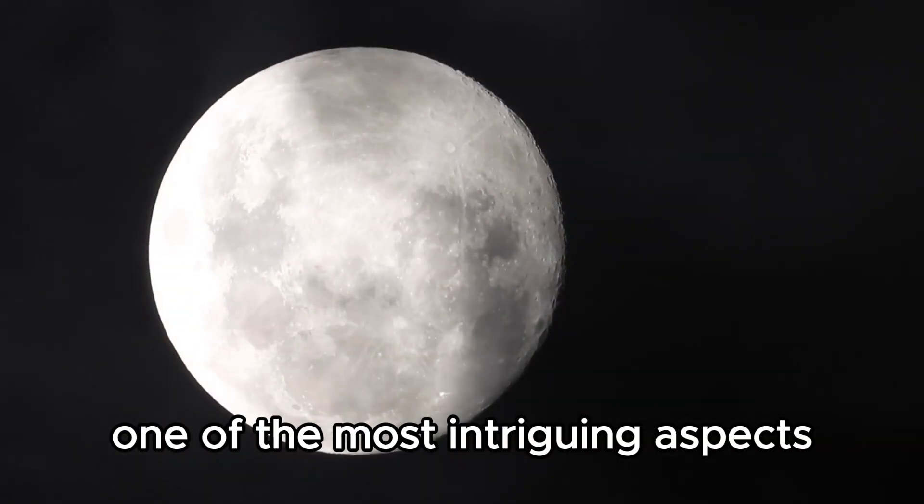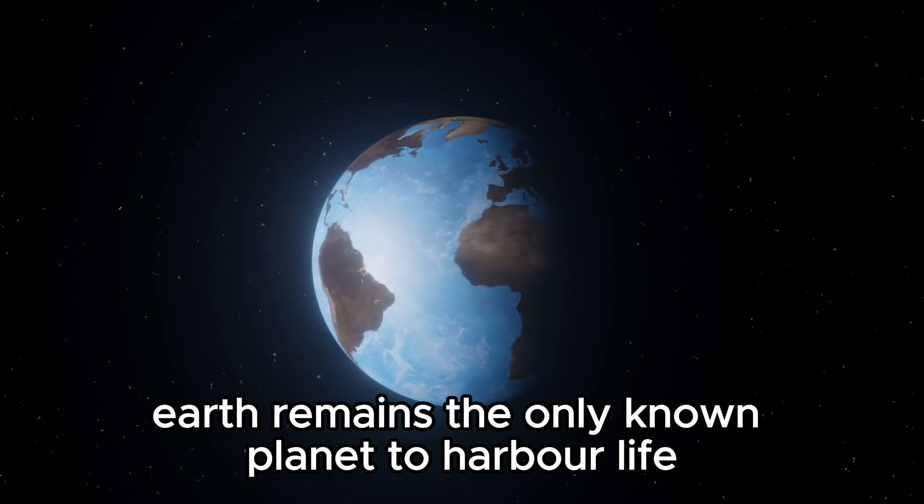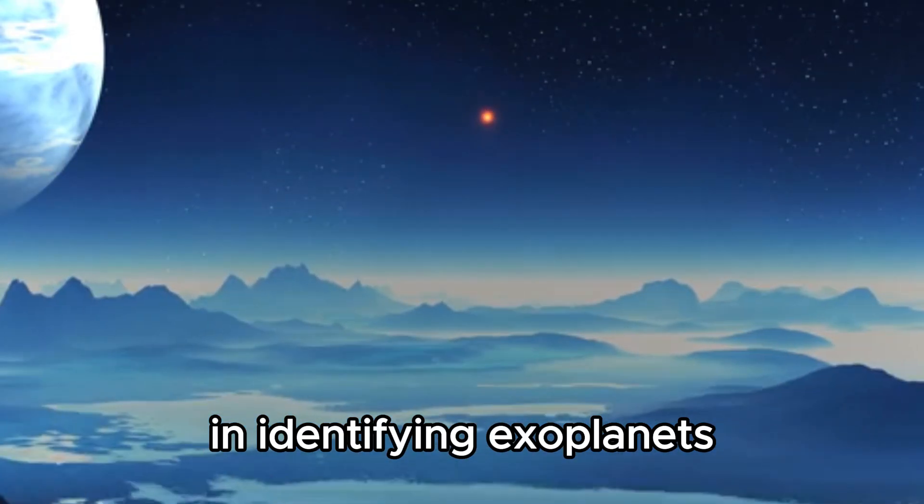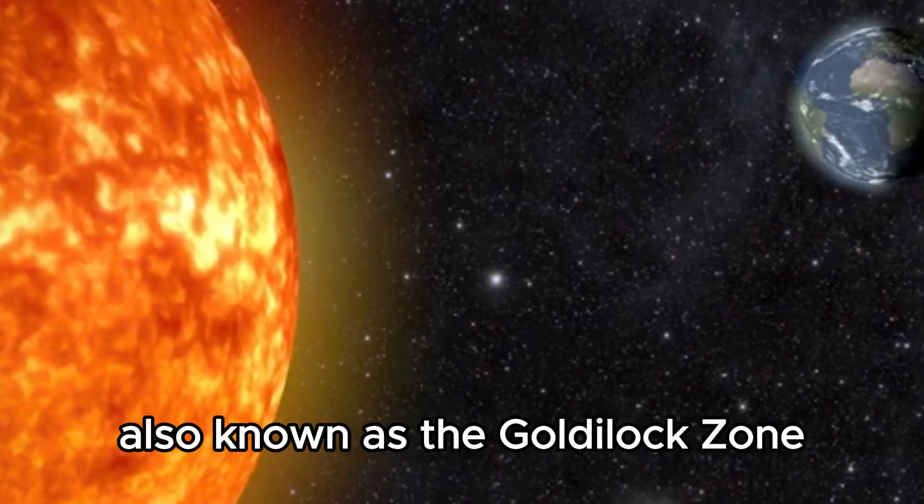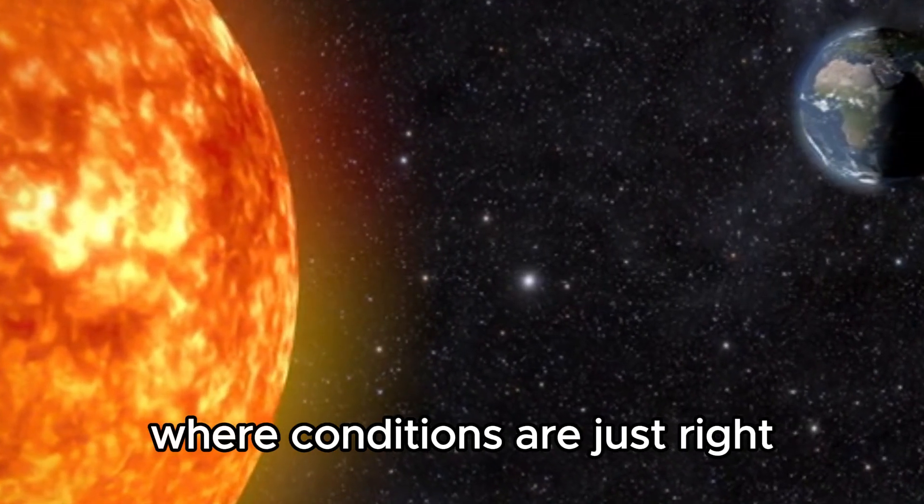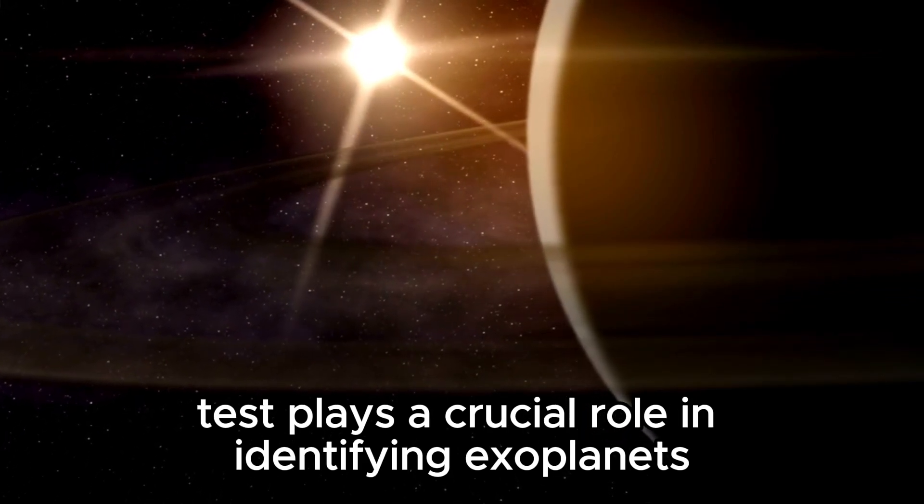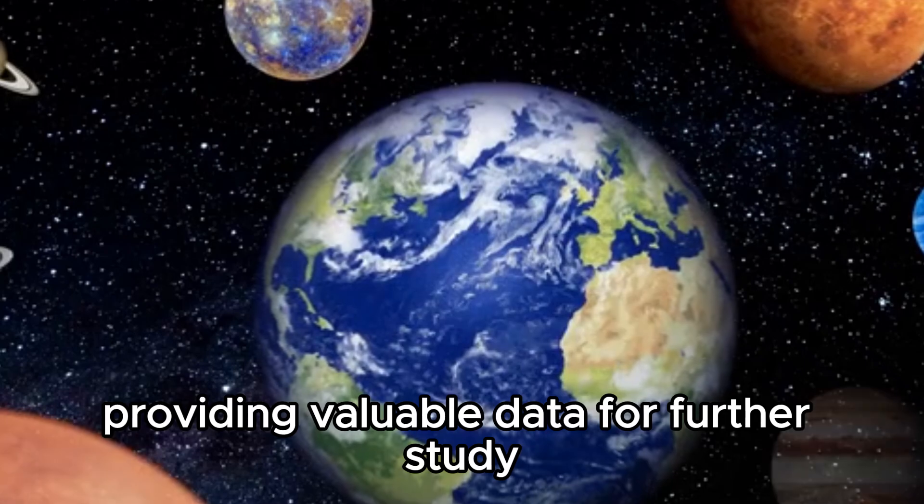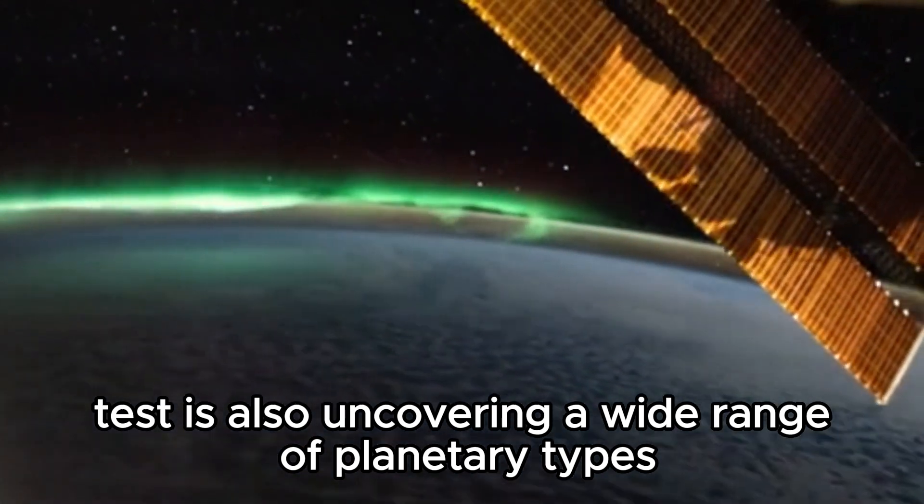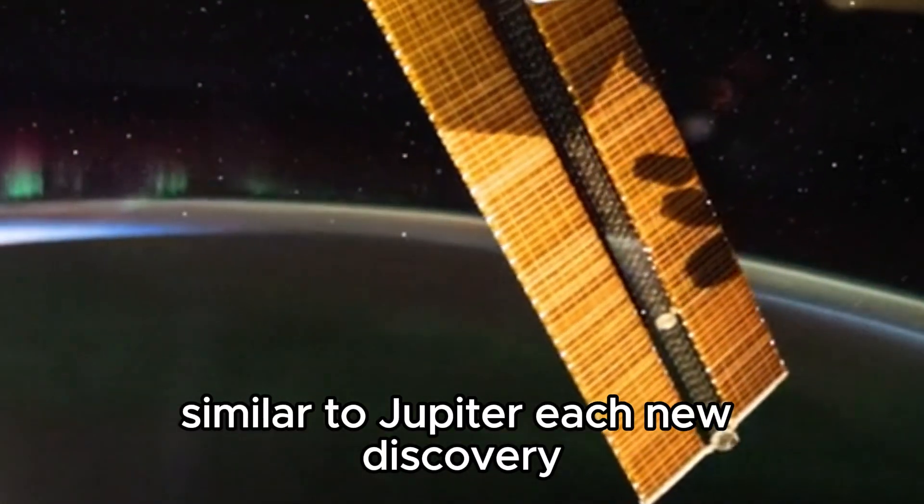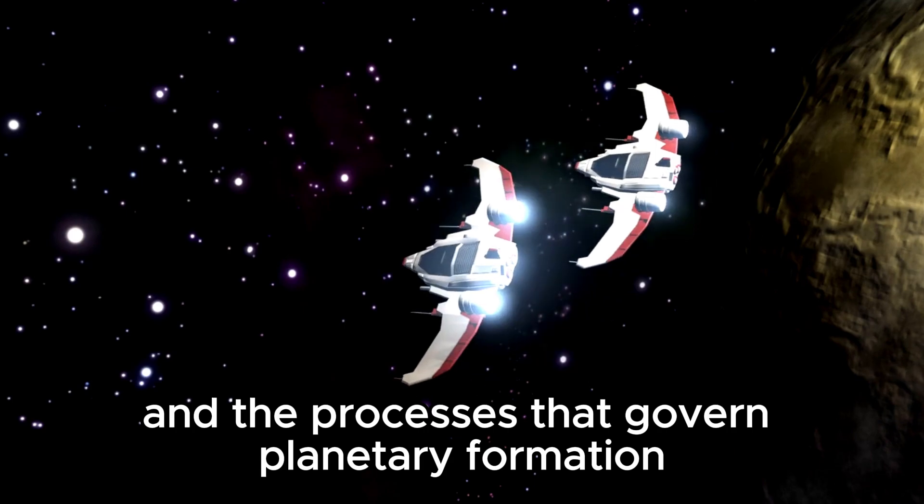One of the most intriguing aspects of exoplanet research is the search for potentially habitable worlds. While Earth remains the only known planet to harbor life, scientists are keenly interested in identifying exoplanets with conditions that could support life as we know it. The concept of the habitable zone, also known as the Goldilocks zone, refers to the region around a star where conditions are just right for liquid water to exist on the surface of a planet. TESS plays a crucial role in identifying exoplanets within this zone, providing valuable data for further study. In addition to searching for habitable exoplanets, TESS is also uncovering a wide range of planetary types, from rocky super-Earths to gas giants similar to Jupiter. Each new discovery adds to our understanding of planetary diversity and the processes that govern planetary formation and evolution.